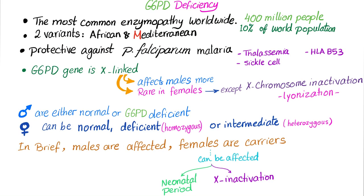G6PD deficiency — glucose-6-phosphate dehydrogenase deficiency — is the most common enzymopathy worldwide. About 400 million people, or close to 10% of the world population, are affected. The world population is more than 7 billion, so it's close to 10%. Two variants again: African and Mediterranean.